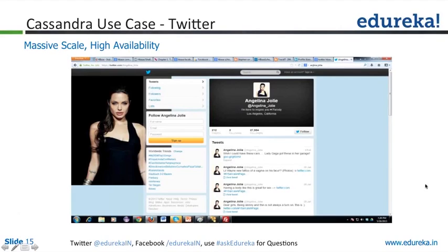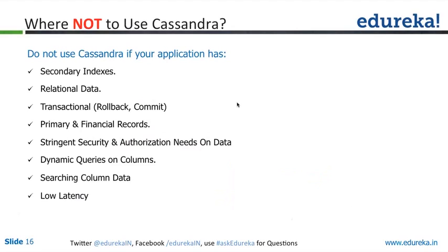Where not to use Cassandra? Absolutely a no-no in the case of a lot of group bys, secondary indexes, transaction data, relational data, stringent security and authorization needs — never use it. Also, dynamic queries. Since Cassandra uses a query modeling concept where you model your storage subsystem using queries, you first look at all the most commonly used queries, then prepare your data model based on that. Since it's a query-based modeling system, dynamic queries are very costly. Wherever there is a dynamic query requirement, don't use Cassandra.